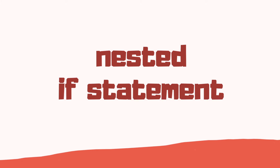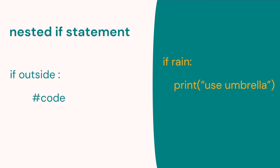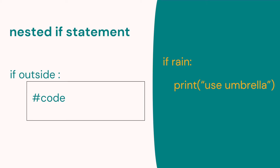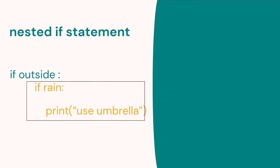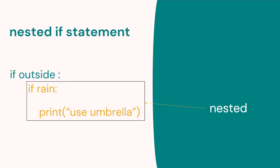That's important when we want to learn about nested if statements. Here we have an if statement — 'if outside' — and if that's true, we go through the code underneath. On the right we can see: if rain, print 'use umbrella'. Now, if we move that if rain statement inside the code block, we have a nested if statement. The if rain is inside the 'if outside' statement, so our block of code includes an if statement. That inside part is called a nested if statement.